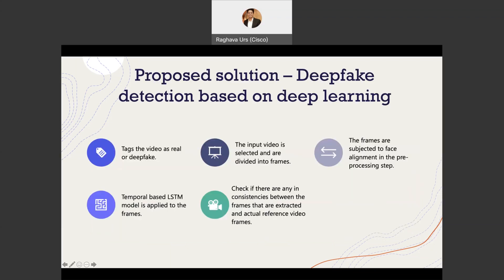In our proposed solution, we will be taking a deep learning approach to detect deepfakes. First, the video which is to be tagged is gathered. The input video is then selected and divided into multiple frames. The frames are subjected to face alignment in the preprocessing step. Finally, the temporal based LSTM long short term memory model is applied to the frames which checks if there are any inconsistencies between the frames that are extracted and actual reference to the video frames.